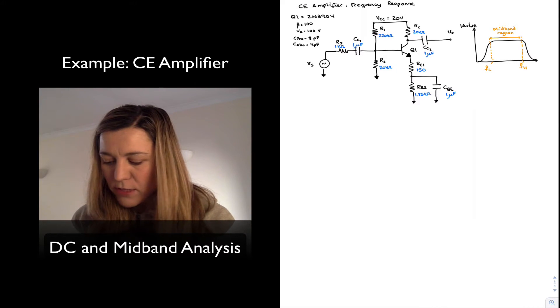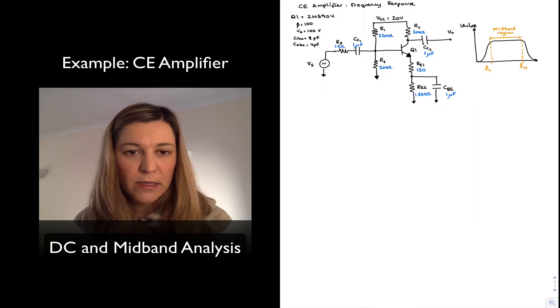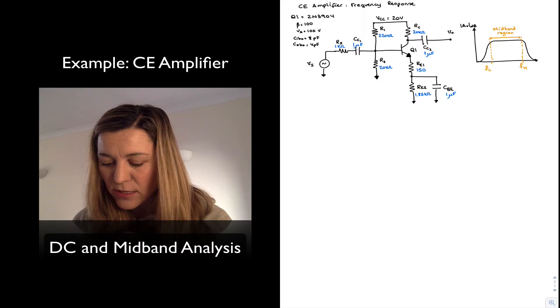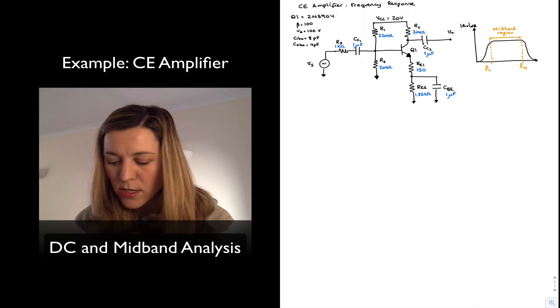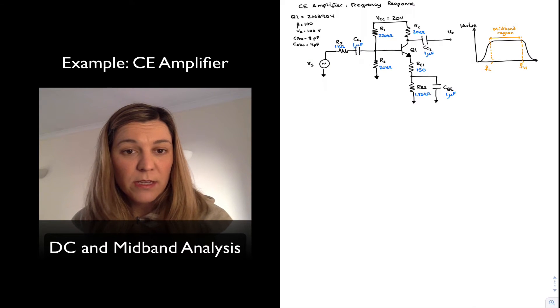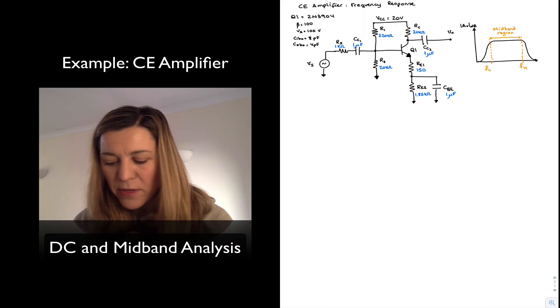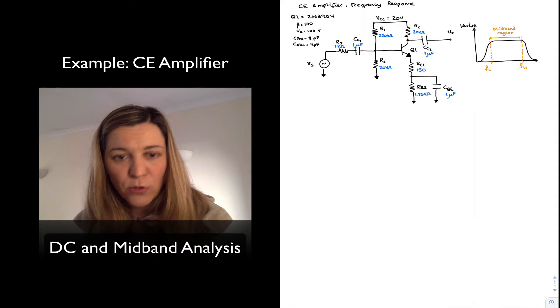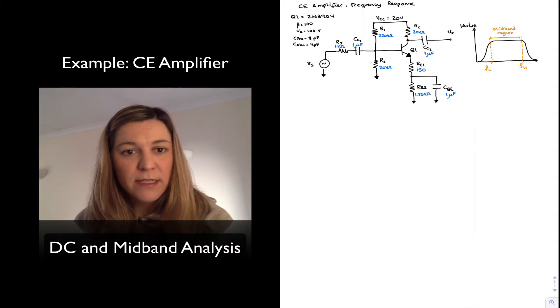I have written down here some assumptions that I'm going to be making in my calculations. I'm assuming that Q1 is an NPN transistor. I have selected a 2N3904. And then I've picked values for my different components that are consistent with the selection of transistor. So a beta of 100, early voltage of 100 volts, input and output capacitances of 8 and 4 pF respectively.